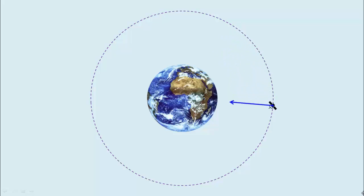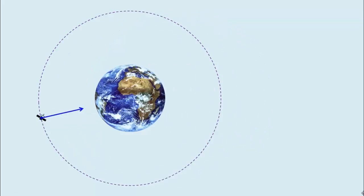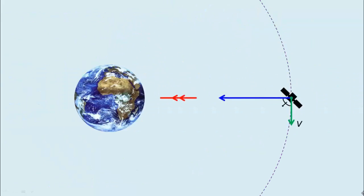An orbiting satellite relies on Earth's gravitational force to provide the required centripetal force. The centripetal acceleration that the satellite needs is v squared over r. The gravitational force provided by the Earth is GMm over r squared.